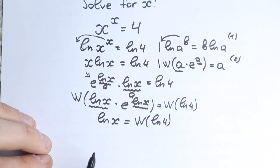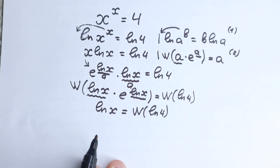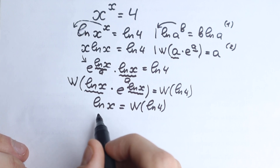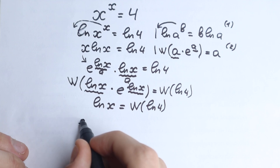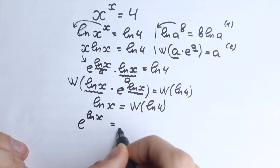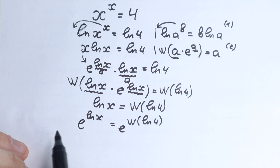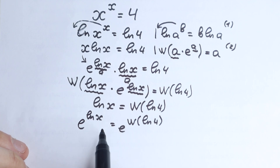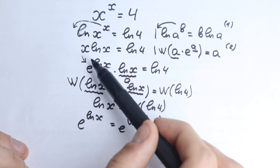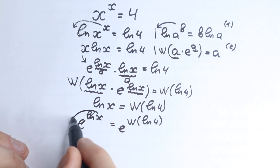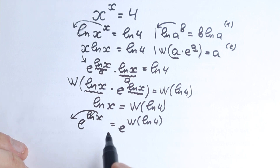We need to find x, not natural log x. So let's apply e as the base on both sides: e to the power of natural log x equals e to the power of Lambert W of natural log 4. We just created base e on both sides — we do this on both sides, not only on the left or only on the right, which would be a really big mistake. Now, e to the power of natural log x equals only our x — this is like the reverse rule — we can cancel e and natural log x and we have only x.